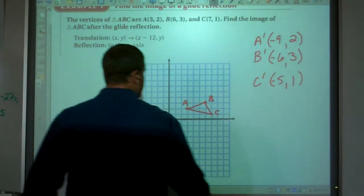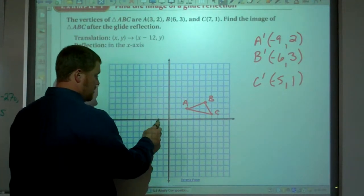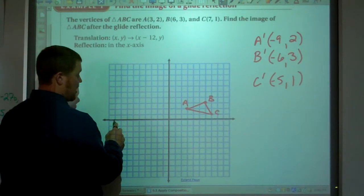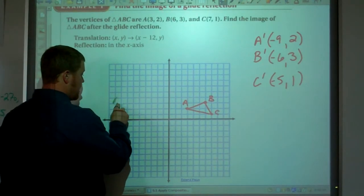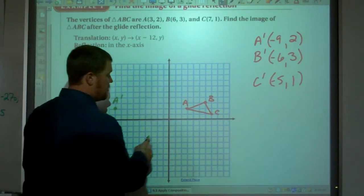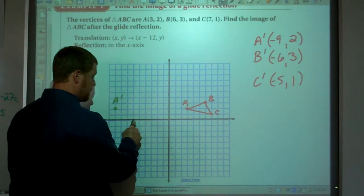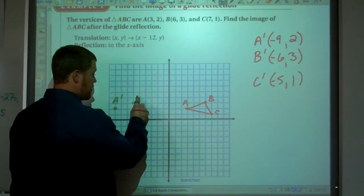So our translation, negative 9, 2, 4, 6, 8, 9. Negative 9, 2. There's A prime. B prime is negative 6, 3. There's B prime.